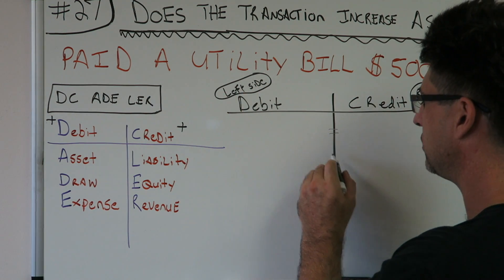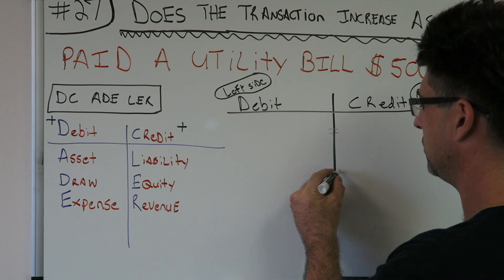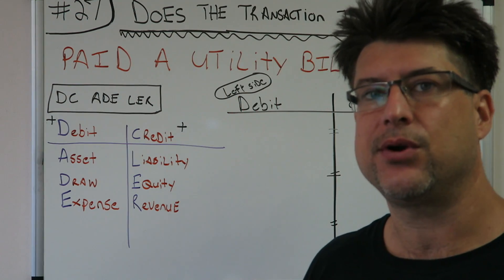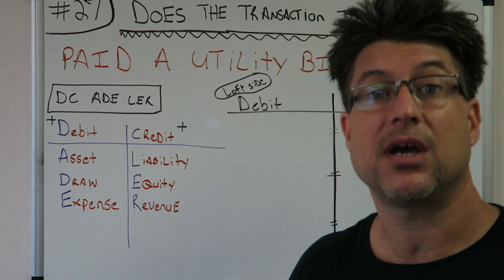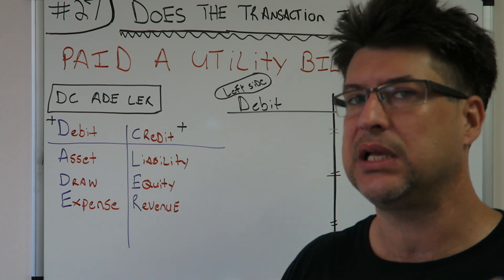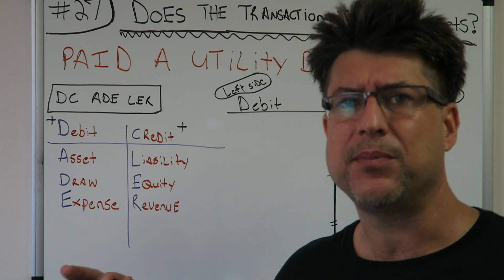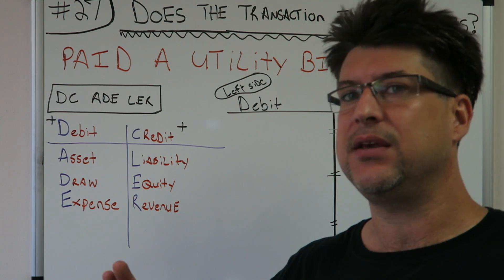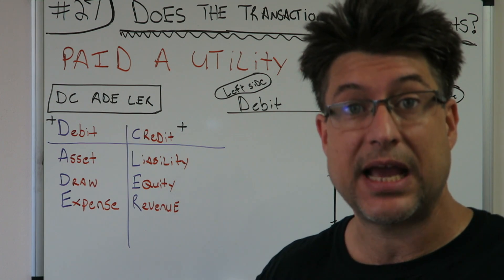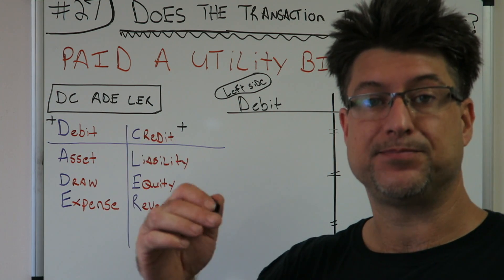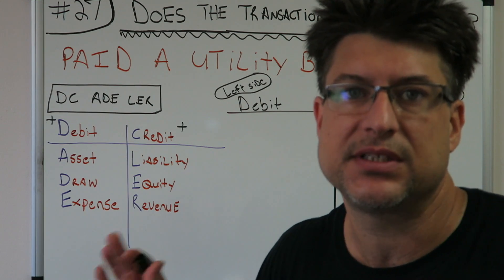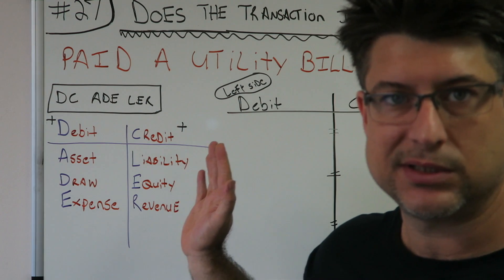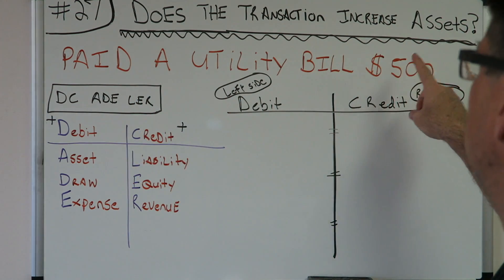They are always going to equal — I'll put equal signs on both sides. Like when you're on accounting software doing bookkeeping in QuickBooks or Easy Accounting or whatever system you might be using to write journal entries, you can't leave the transaction if the debits and credits don't equal. It's a very steadfast rule. Does the transaction increase assets? What's the transaction? Paid a utility bill for $500.